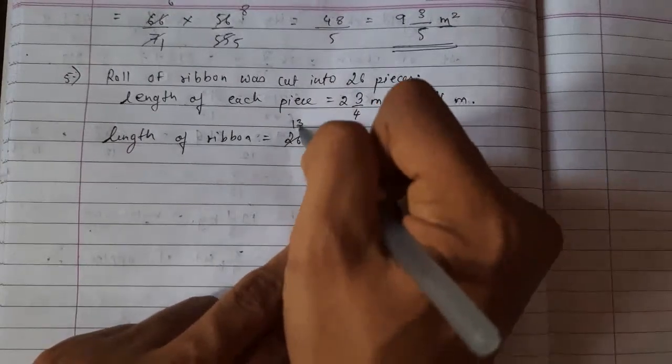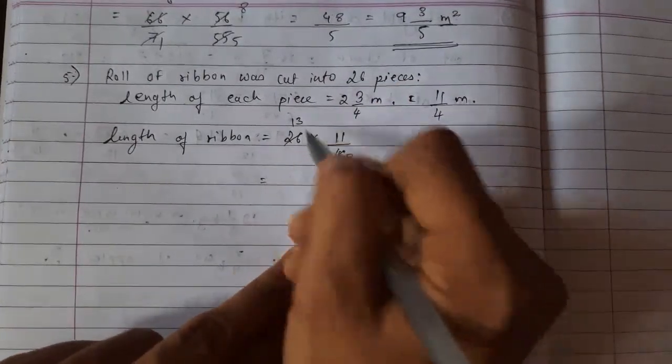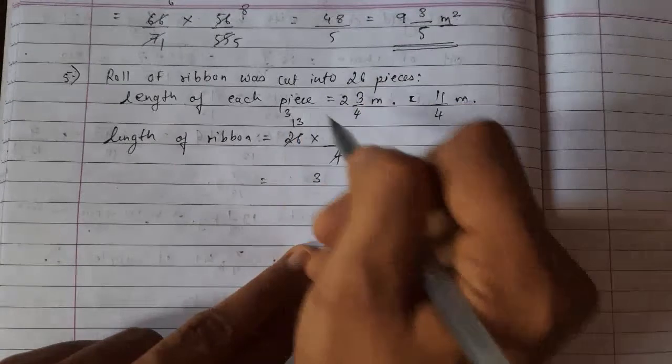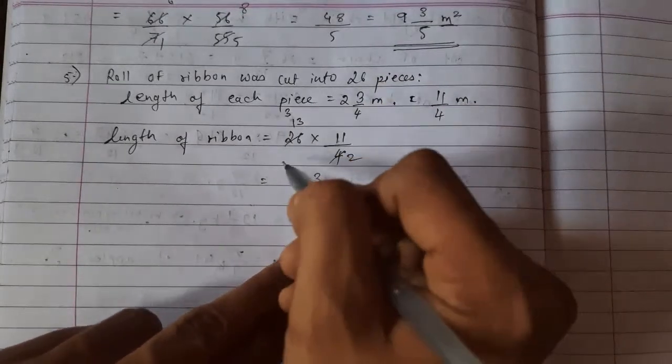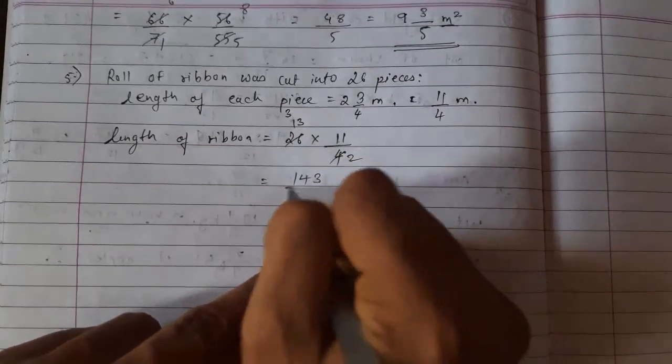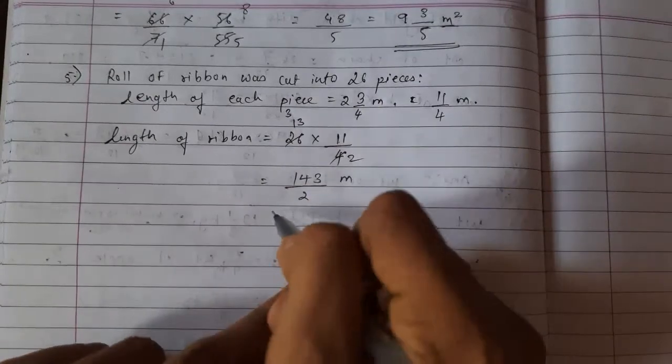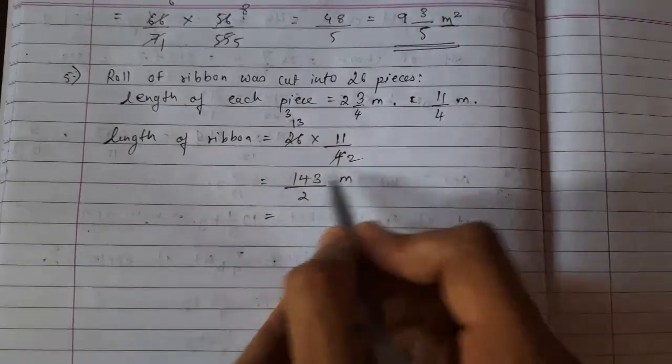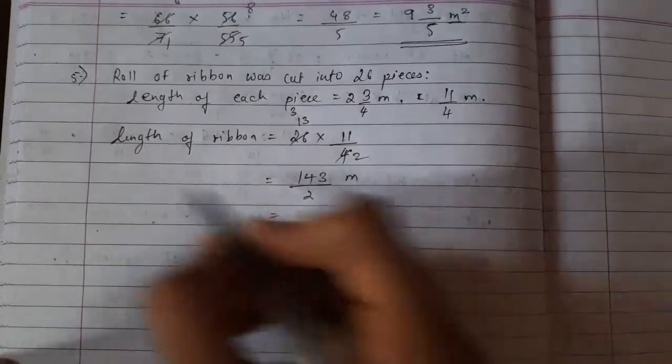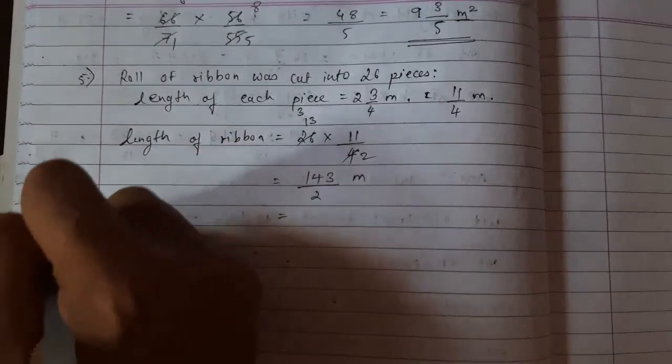2 twos are 2, 13s are... 11, 3s are 33. 11 ones are 11 plus 3. 143 upon 2 meters. If you want this in mixed fraction, you can get it.